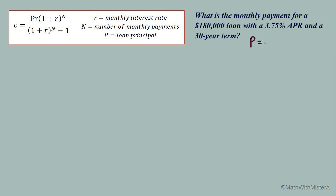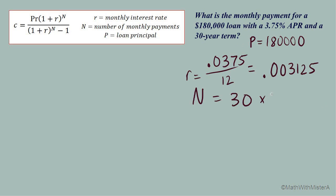So given this information we know that P our principal is $180,000, our APR 3.75% which would be 0.0375 as a decimal, that's still annual so we need to divide by 12 to get our monthly rate, and lastly the number of monthly payments, it's 30 years so we need to multiply by 12 to determine how many months this is, that gives us 360 months in 30 years.